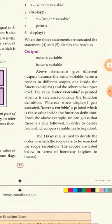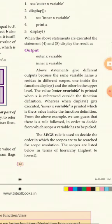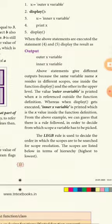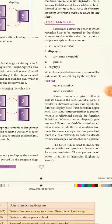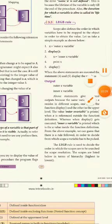So this is the LEGP rule. You should decide the order in which the scopes are to be searched for scope resolution. The scopes are listed below in order of highest to the lowest value.